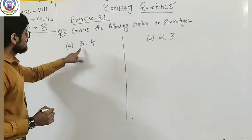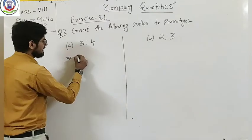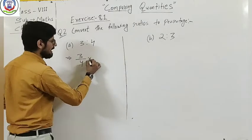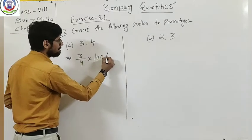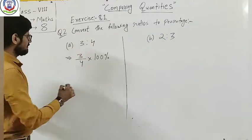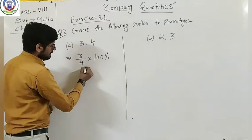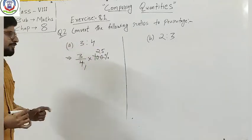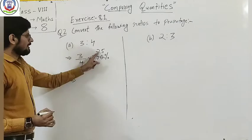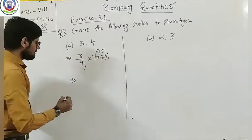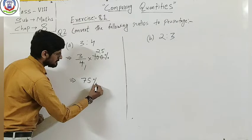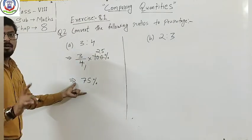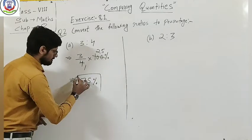After converting, multiply by 100. So let's proceed: 3 is to 4 can be written as fraction 3 by 4, and multiply it by 100 percent. 4 and 100 cancel, that is 25, and 25 times 3 is 75 percent. This is your answer, 75%.